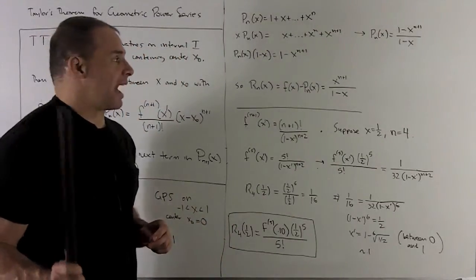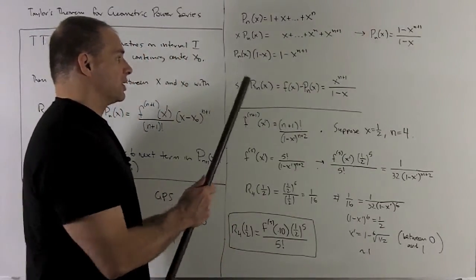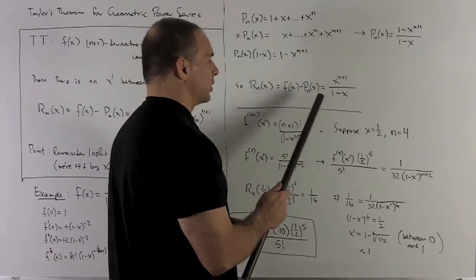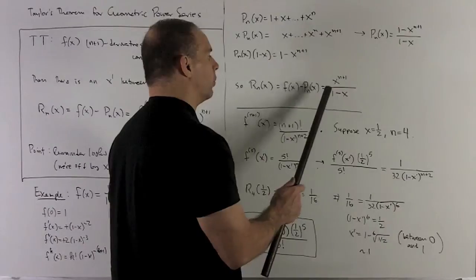Now, if I take the difference of f and this p sub n of x, remember we're using f as 1 over 1 minus x, that's going to give me x to the n plus 1 over 1 minus x.